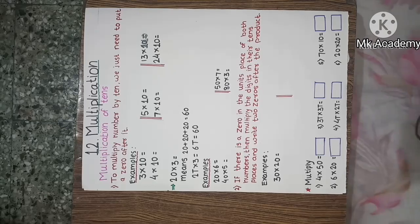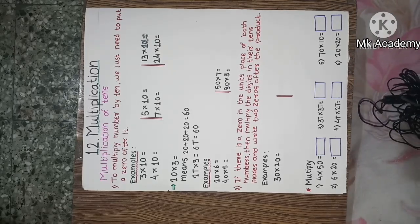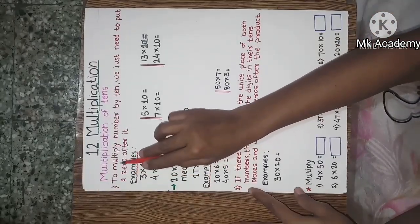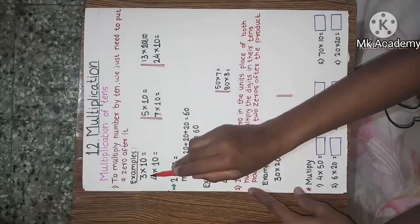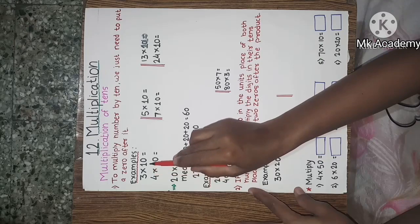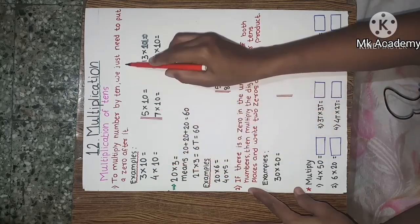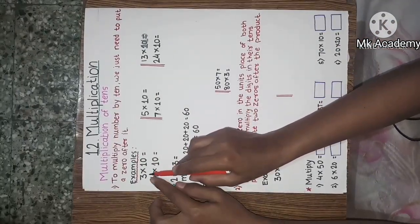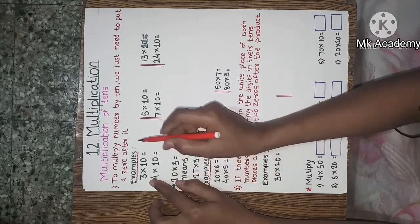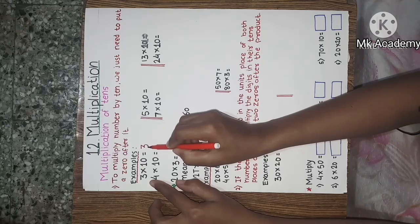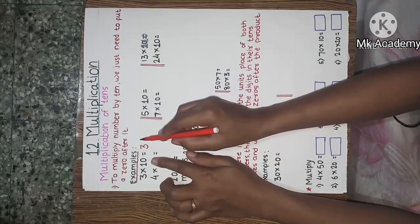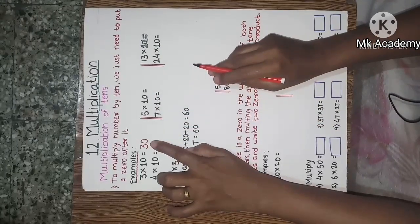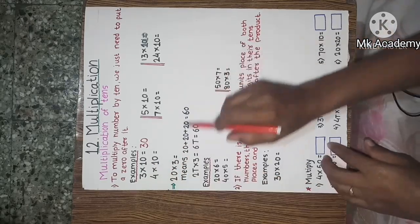See the first example: 3 into 10. The property is to multiply a number by 10 — we just need to put 0 after it. This is the number 3, and we put 0 after it, so we get the answer 30. So 3 into 10 is equal to 30.